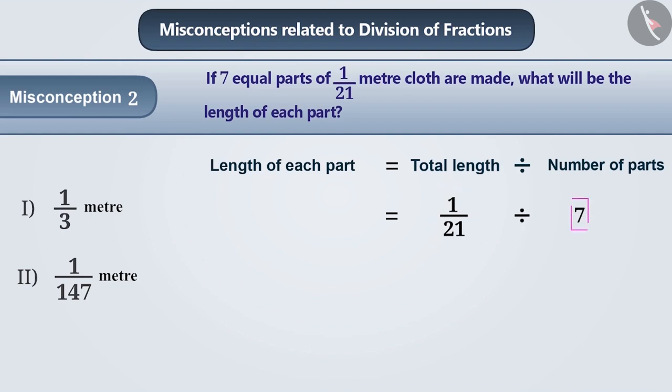While dividing a fraction by a whole number, children often tend to divide the denominator. For example, here the result obtained while dividing 1 by 21 by 7 is 1 by 3. This is the wrong answer.